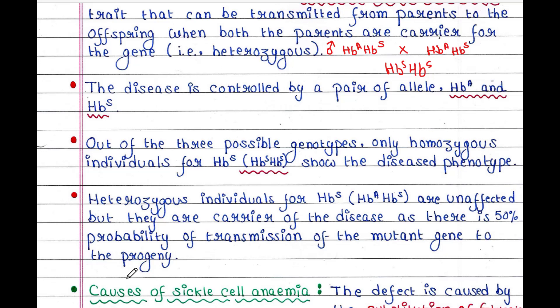From the father there is a 50 percent chance that his gamete containing the mutant gene is passed to the progeny, since half of the gametes contain HbA and half contain HbS. The same can be stated for the mother. So if we see the gametes that they will form, both will produce two types of gametes.